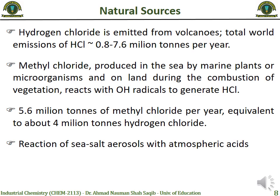It is estimated that around 5.6 million tons of methyl chloride are produced every year, and when calculating the conversion of methyl chloride to HCL, approximately 4 million tons of hydrogen chloride are produced naturally from methyl chloride each year. The third main natural source is the production of hydrogen chloride from the reaction of sea salt aerosols with atmospheric acids. These are the three main natural sources of hydrochloric acid in our atmosphere.